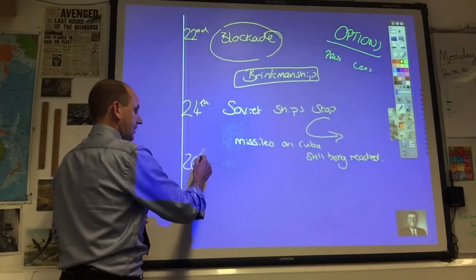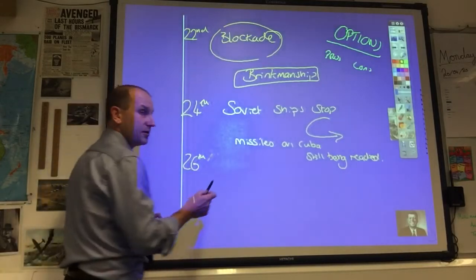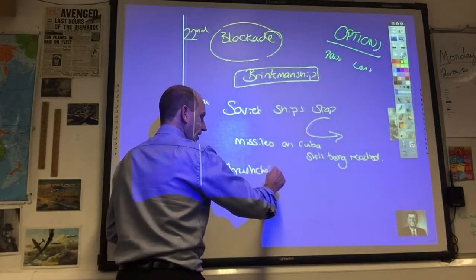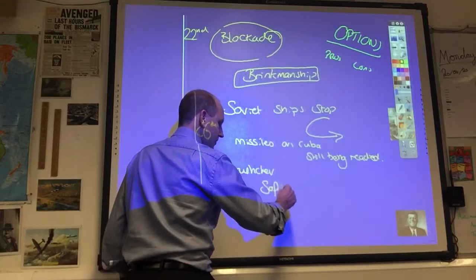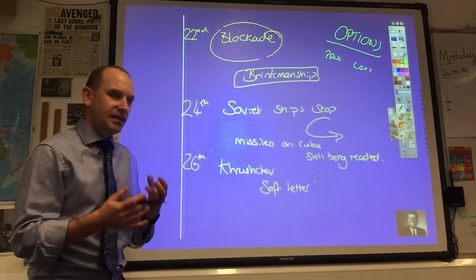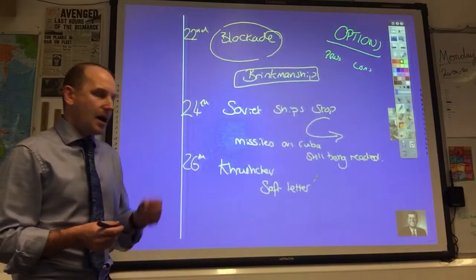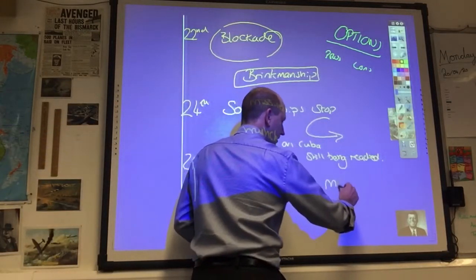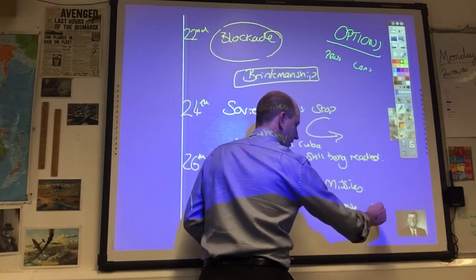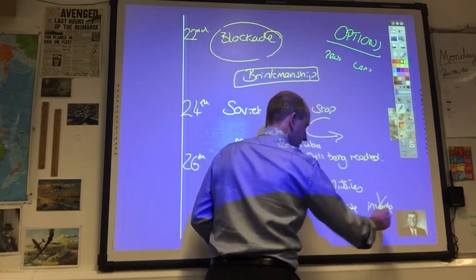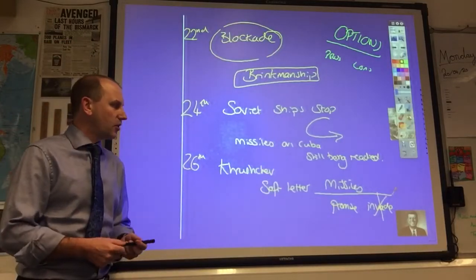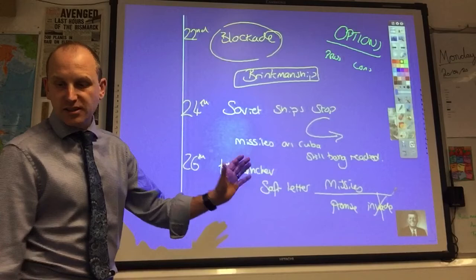On the 26th, in this 13-day crisis, great film as well, 13 Days, watch that if you haven't already. This is when Khrushchev sends his first letter. The best thing to do is call it the soft letter probably. It's quite an emotional letter, it appeals to Kennedy's better nature and says let's not tug too tightly on the knots of war. And it offers the missiles coming out of Cuba in exchange for a promise from Kennedy not to invade. We'll take the missiles out if we can guarantee Cuba's safety. It's good propaganda for the Soviet Union to have a beacon of communism in the Western Hemisphere. That's the first deal proposed, looks like a decent deal.